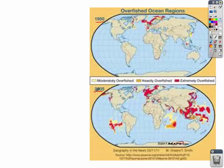In 1950, the areas that were overfished were basically your Scandinavian countries and northern Europe. But if we look at today, the overfished areas have grown dramatically. You're seeing a big area off the coast of South America, and we still see a problem in northern Europe.